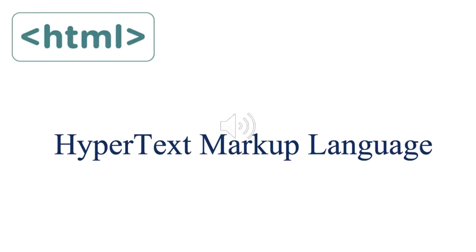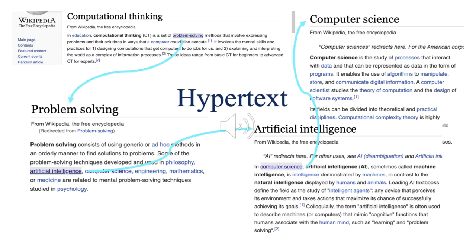The first of the three languages we'll learn something of in this course is HTML, which stands for Hypertext Markup Language. The hypertext part of the name refers to text in which some part of the text links you to some other text — you're very familiar with this in the way that one web page points to another. For example, if we look up computational thinking in Wikipedia, you'll see the word 'problem solving' in blue with an underline, meaning it's a web link. Clicking it takes us to the Wikipedia article on problem solving, and from there we can jump to articles on artificial intelligence and computer science. This jumping from one text to another is what hypertext refers to.